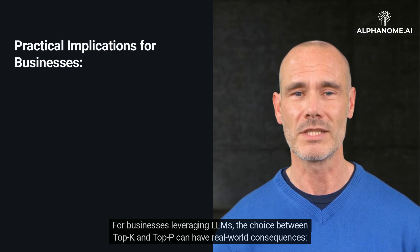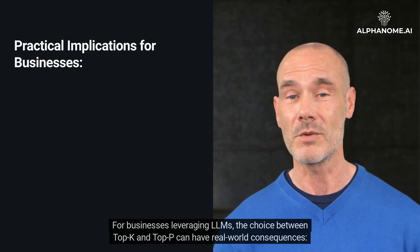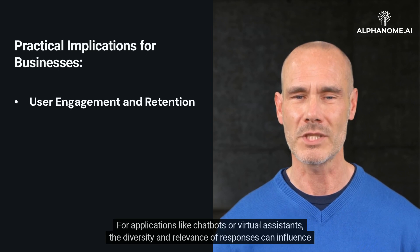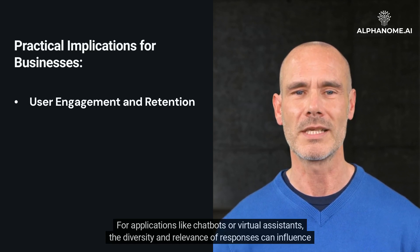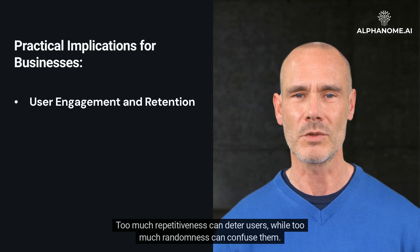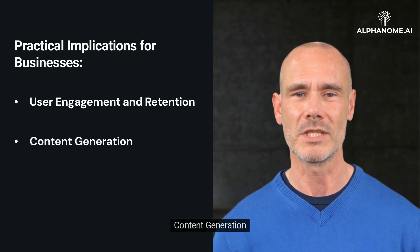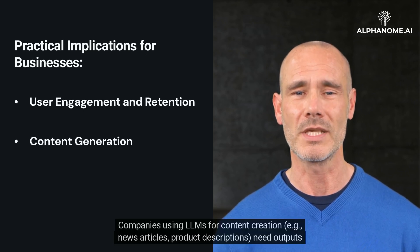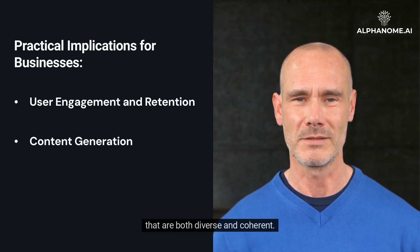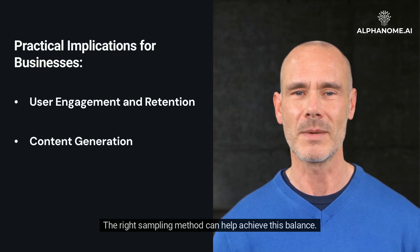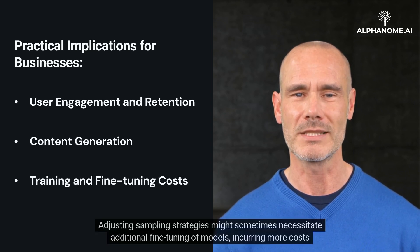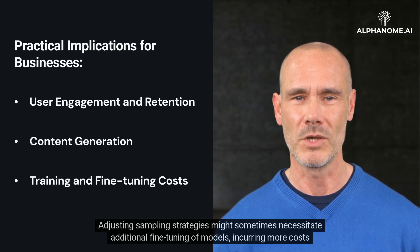For businesses leveraging LLMs, the choice between Top K and Top P can have real-world consequences. User Engagement and Retention: for applications like chatbots or virtual assistants, the diversity and relevance of responses can influence user engagement — too much repetitiveness can deter users, while too much randomness can confuse them. Content Generation: companies using LLMs for content creation, such as news articles or product descriptions, need outputs that are both diverse and coherent, and the right sampling method can help achieve this balance. Training and Fine-Tuning Costs: adjusting sampling strategies might sometimes necessitate additional fine-tuning of models, incurring more costs and resources.